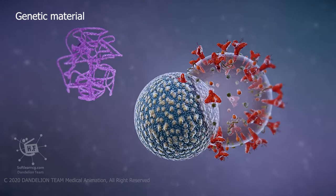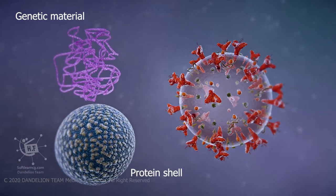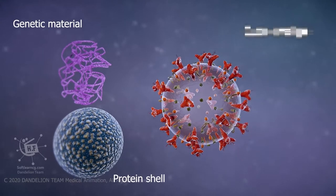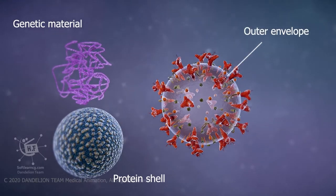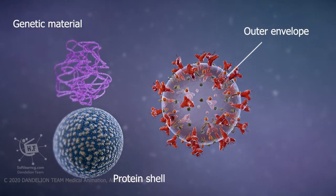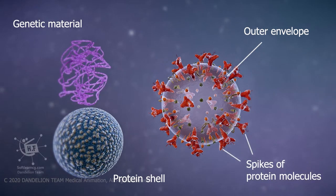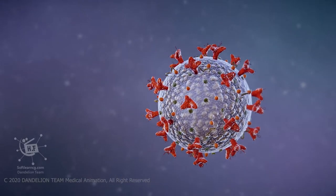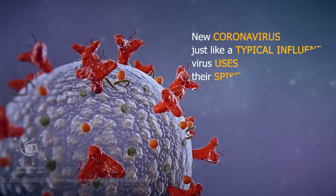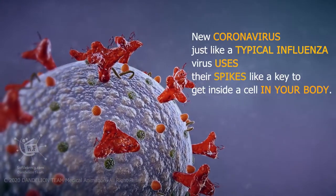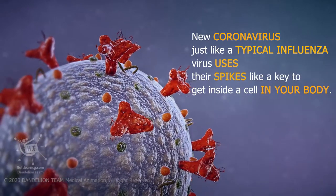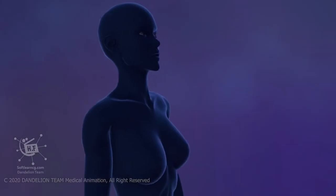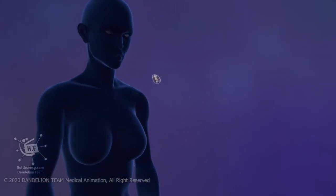A protein shell provides hard protection for genetic materials, and the outer envelope allows the virus to infect cells by merging with the cell's outer membrane. Projecting from the envelope are spikes of protein molecules. The new coronavirus, just like a typical influenza virus, uses these spikes like a key to get inside a cell in your body.